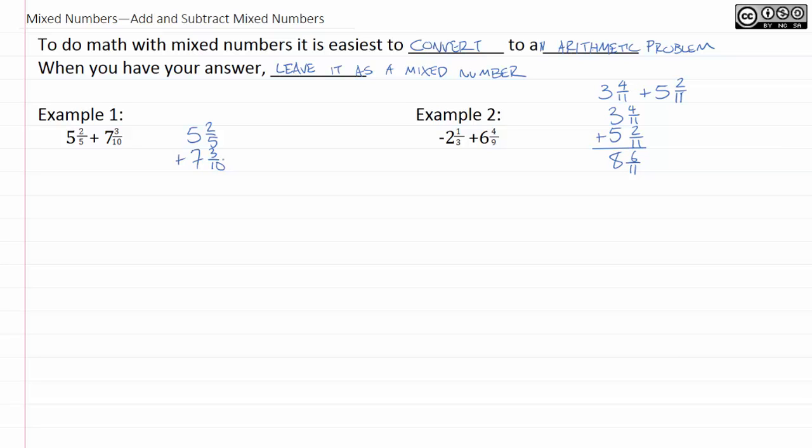We have 5 and 2 fifths plus 7 and 3 tenths. We want both of these to have a common denominator. So, I can just multiply the top and the bottom of this one up top by 2. And then this will become 5 and 4 tenths, plus 7 and 3 tenths.